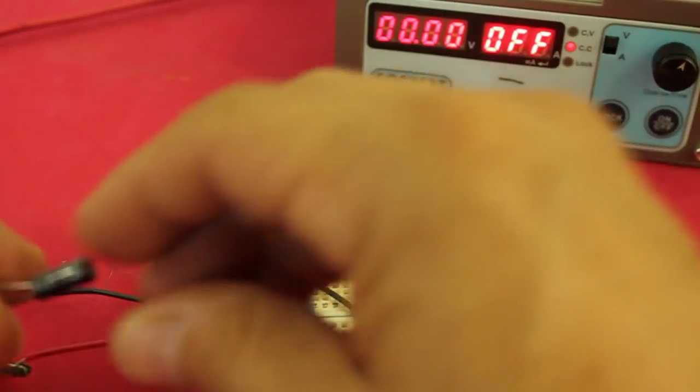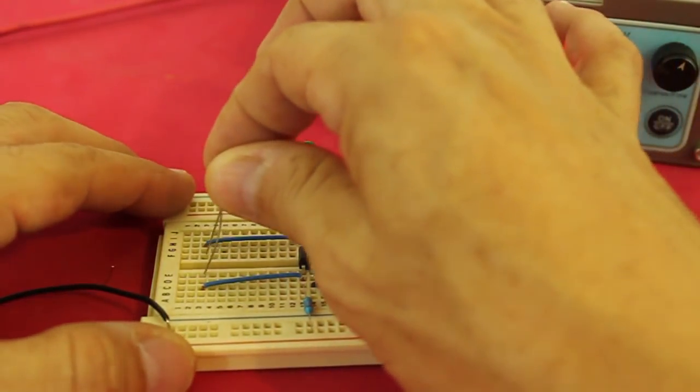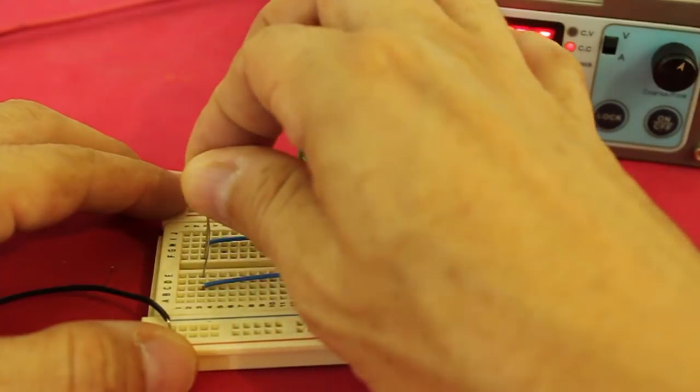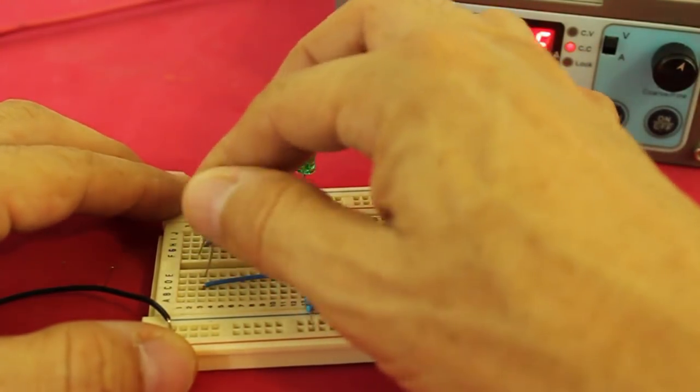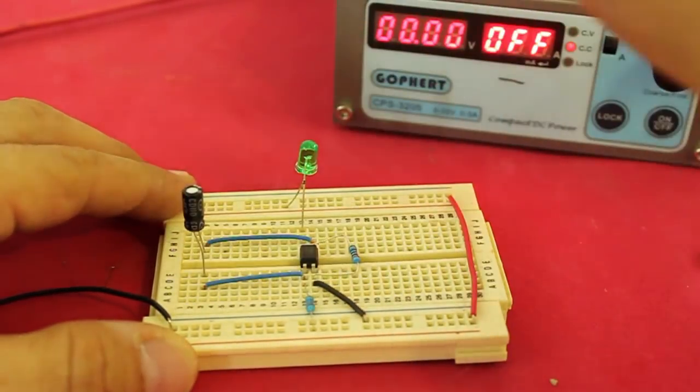Now I will change the capacitor with a smaller one of 47 microfarads to see how the frequency of oscillation increases.